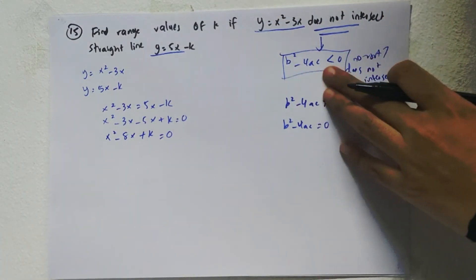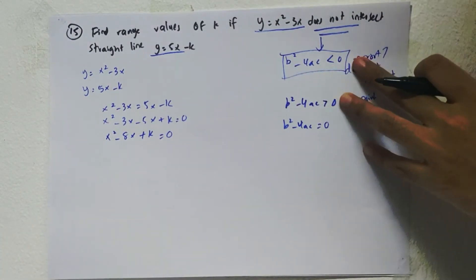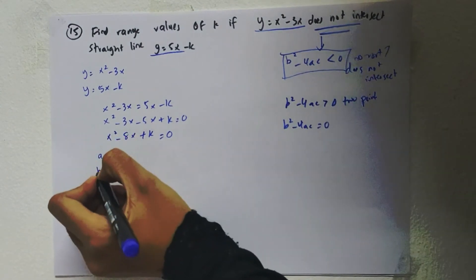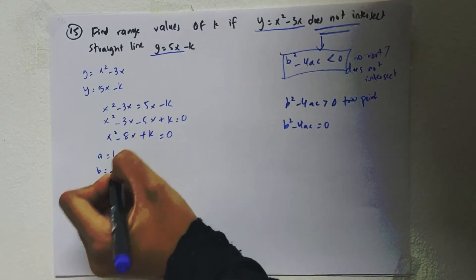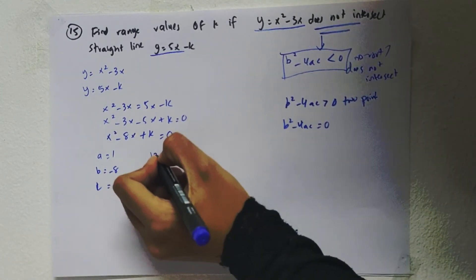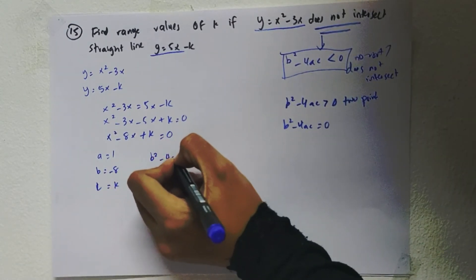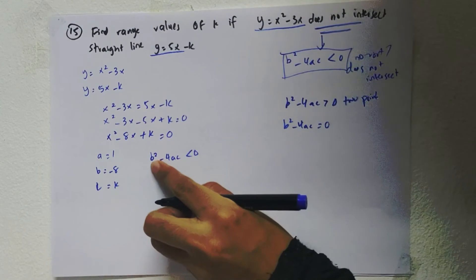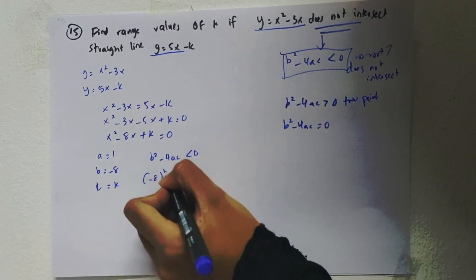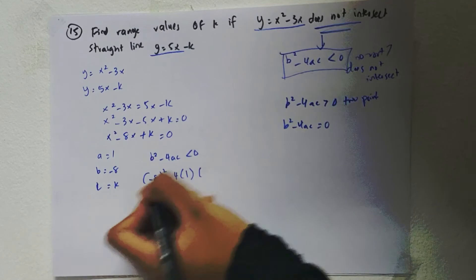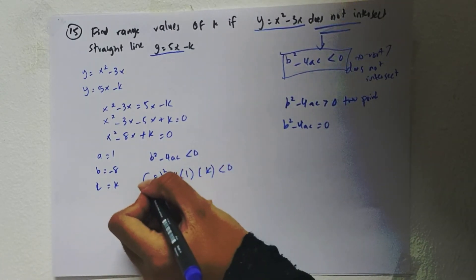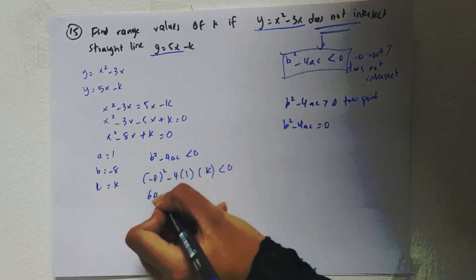Does not intersect means b squared minus 4ac is smaller than zero. We have a equals 1, b equals negative 8, and c equals k. So b squared minus 4ac is smaller than zero: negative 8 squared minus 4 times 1 times k is smaller than zero, so 64 minus 4k is smaller than zero.